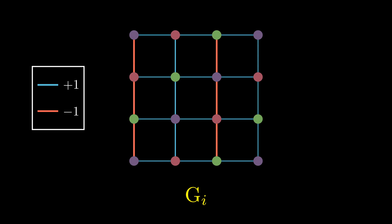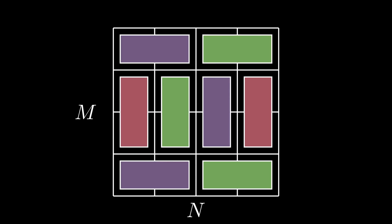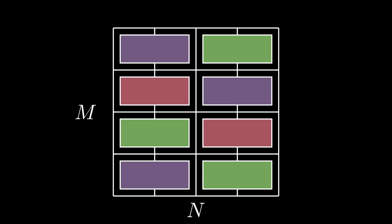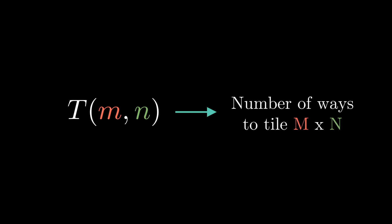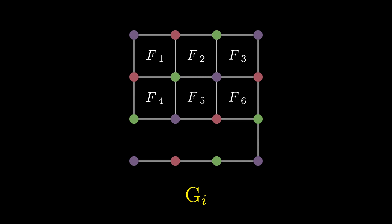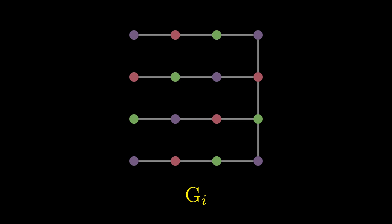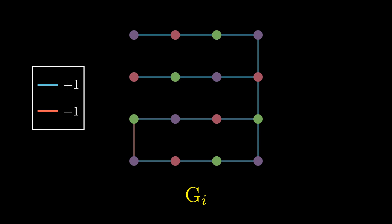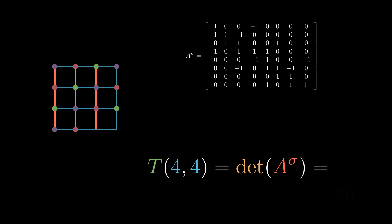Let's go back to the original problem and define the solution. The original question is: how many ways can we perfectly arrange 2 by 1 dominoes on an m by n grid? To solve this, we define t(m, n). Step one: construct our planar graph on the grid. Step two: remove edges until only the outer face remains. Step three: work backwards, inserting edges and signing each one so the boundary cycle of each face is properly signed. Step four: find the signed adjacency matrix A-sigma. Finally, the answer is just the absolute value of the determinant of A-sigma. This solution runs in polynomial time O(n³).